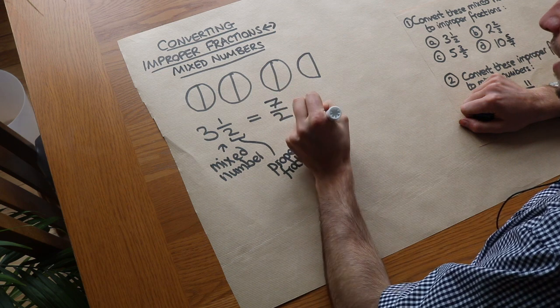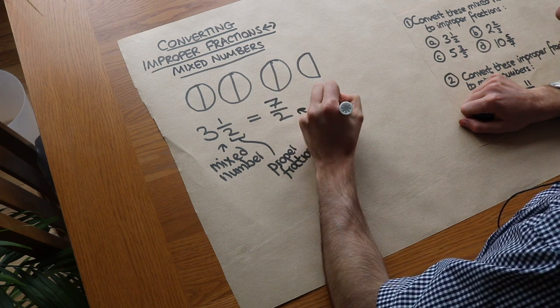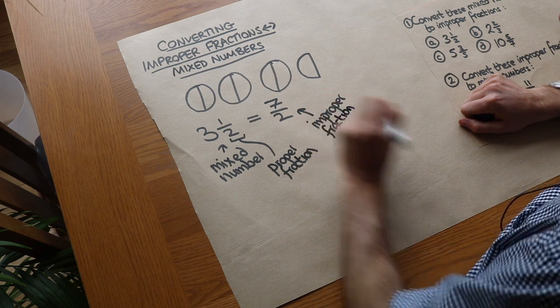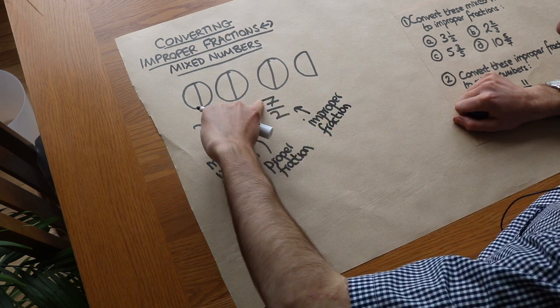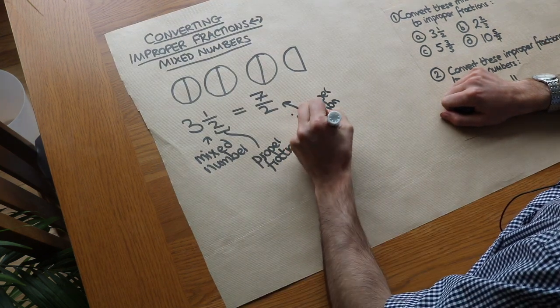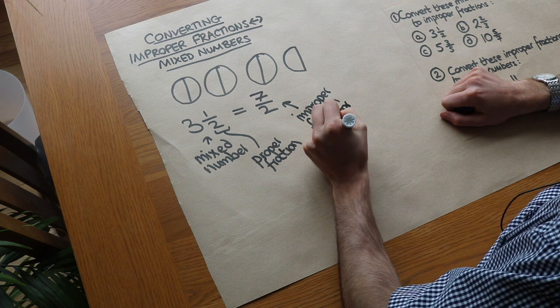This meanwhile is known as an improper fraction, also known as a top-heavy fraction, and that's because the numerator is greater than the denominator.